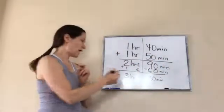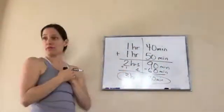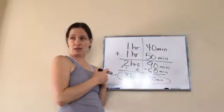There you go. So I exercised for a total of 3 hours and 30 minutes. See how I did that? Okay, now let's try one more.